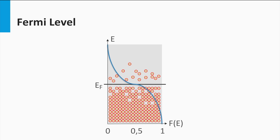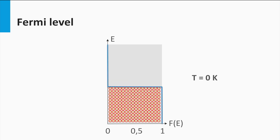For a metal it is easy to see where the Fermi level is positioned. Physicists use in general the term Fermi level, while chemists might call this level the total chemical potential of an electron. The shape of the Fermi-Dirac distribution changes with temperature. At absolute zero — a temperature of zero Kelvin or minus 273 degrees Celsius — the function looks like a step function. The probability to occupy a state below the Fermi level is 100%, whereas the probability above the Fermi level is 0%.